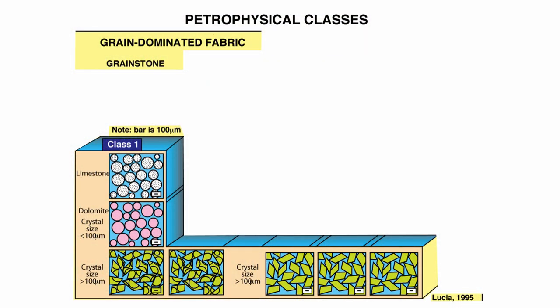The reason he comes up with these different classes is that he can use the Dunham texture to predict his petrophysical classes. Class 1 comprises the limestone that are grain-dominated, the dolomite with grain size smaller than 100 microns, and all dolomites with crystal size larger than 100 microns.